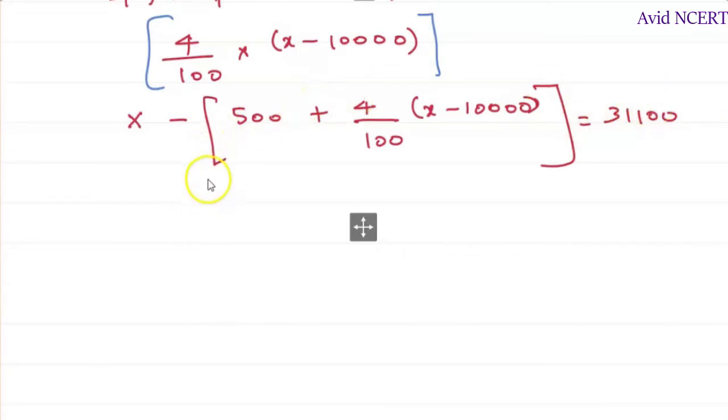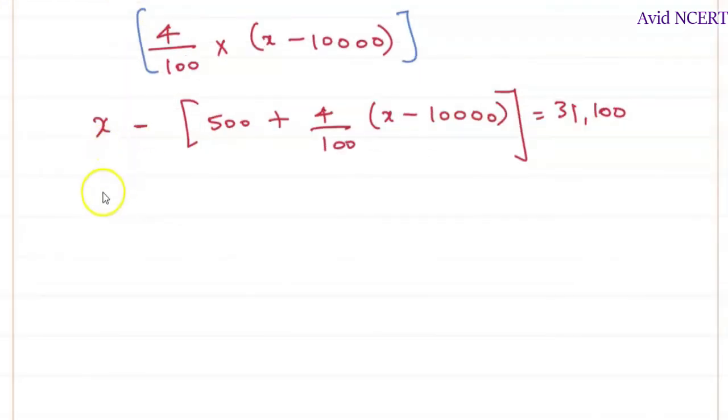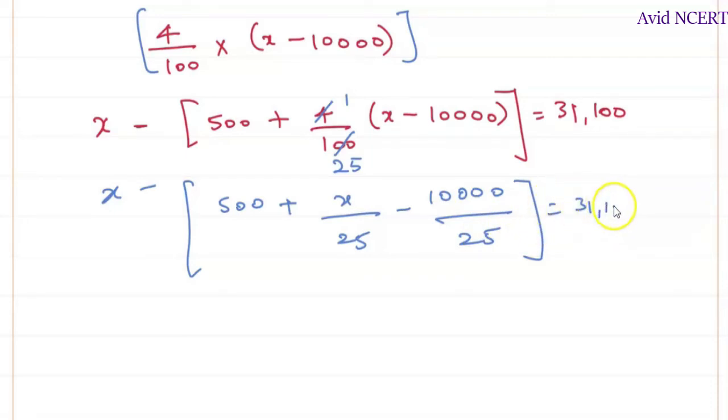Now we have to simplify this to find the total sales x value. This can be simplified as follows: x minus 500 plus, since 4 times 25 is 100, we can write this as x by 25 minus 10,000 by 25 equals 31,100.